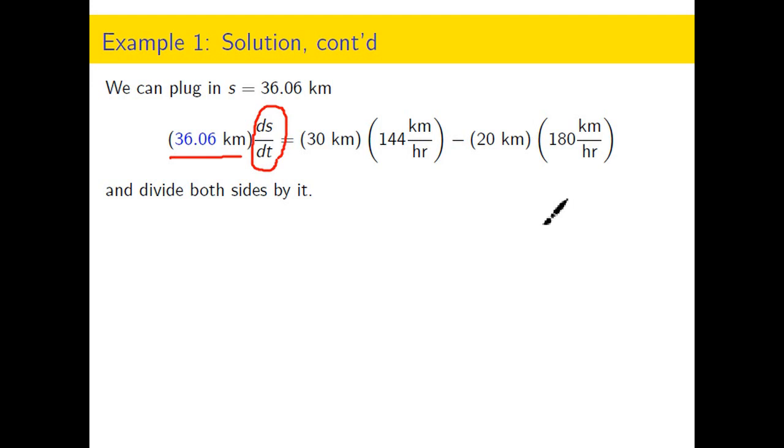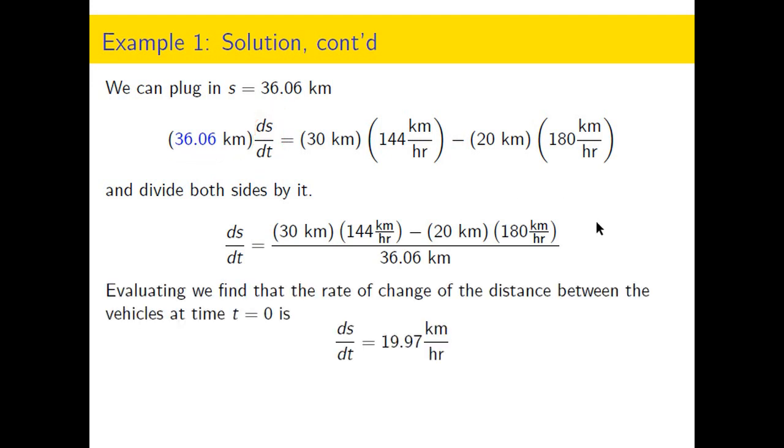So we divide both sides by 36.06, and grab our calculators, and we find that the solution, what they've asked us for, is this. The rate at which the distance between the vehicles is changing is 19.97 kilometers per hour.